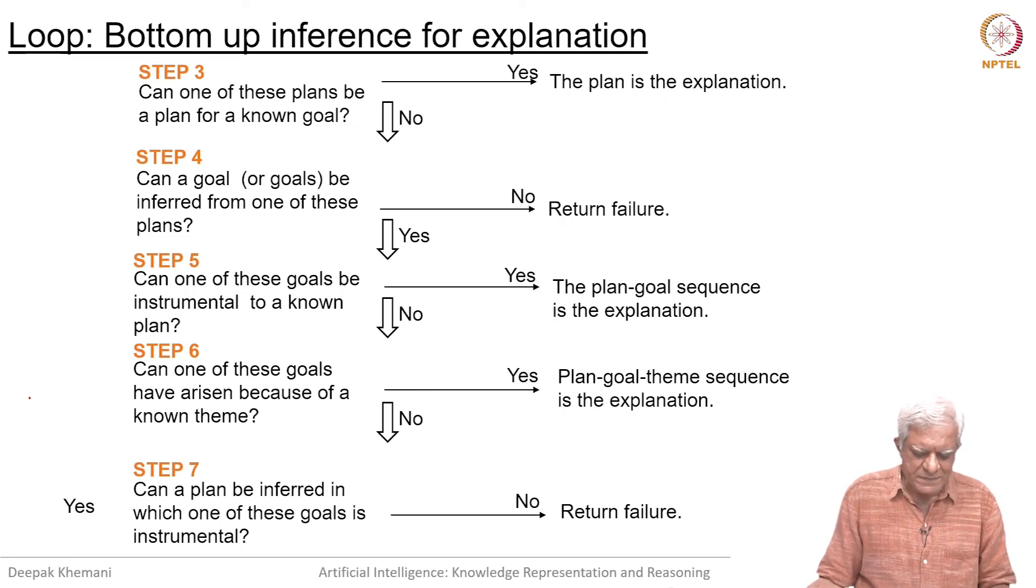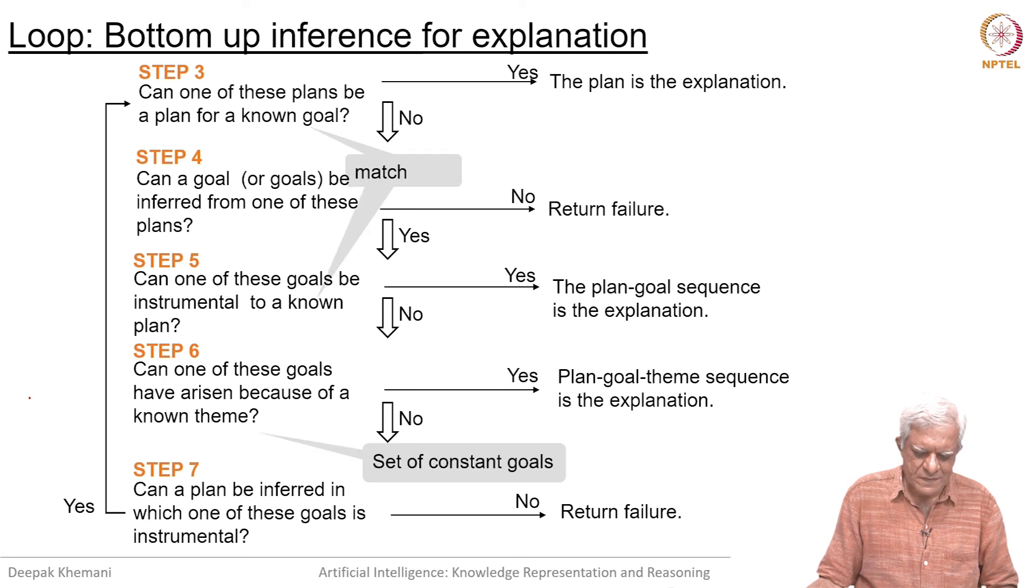Finally, can a plan be inferred in which one of these goals is instrumental? If yes, then you go through this cycle again. Theme is a set of constant goals as we said.